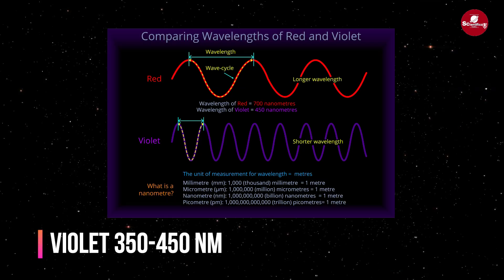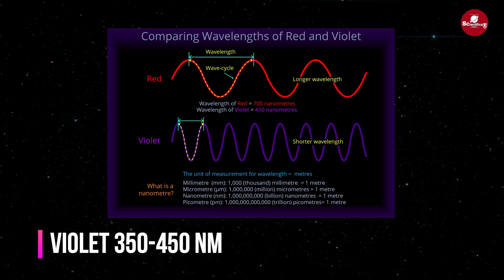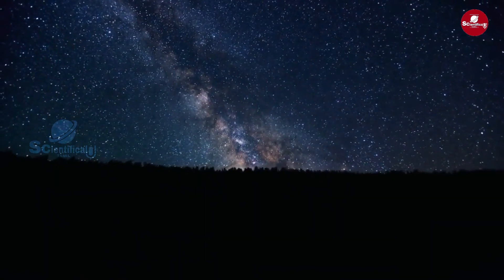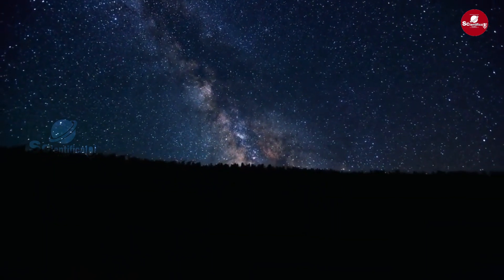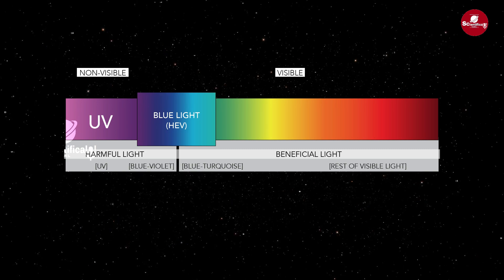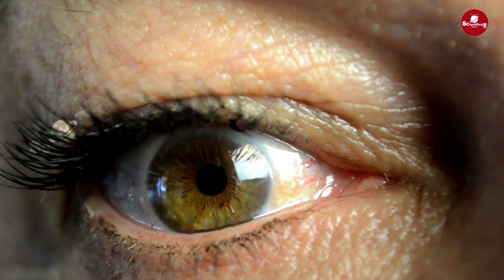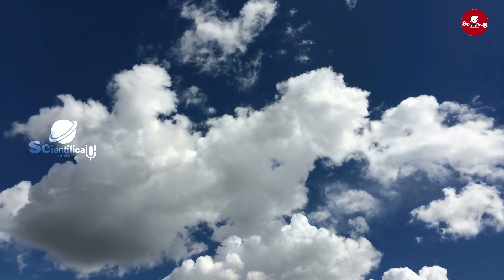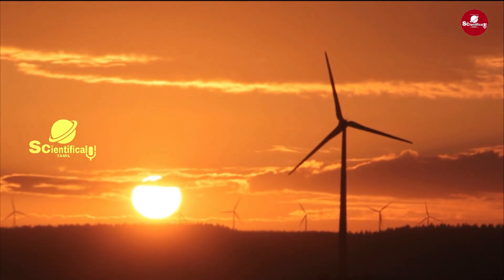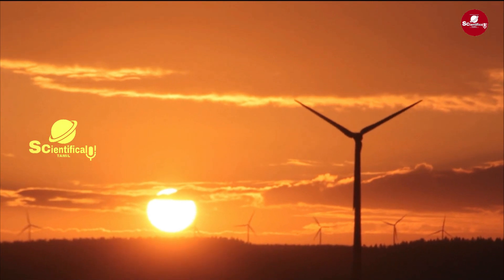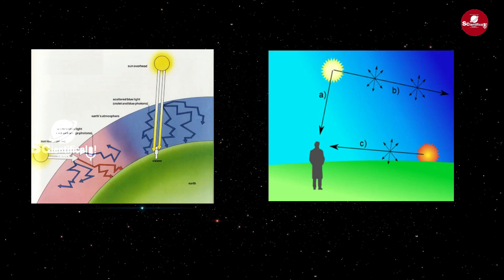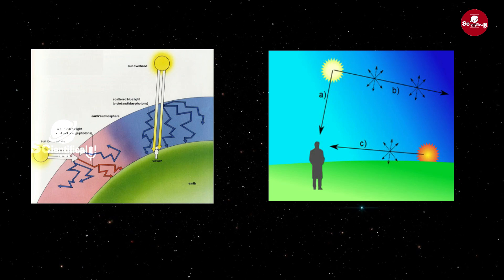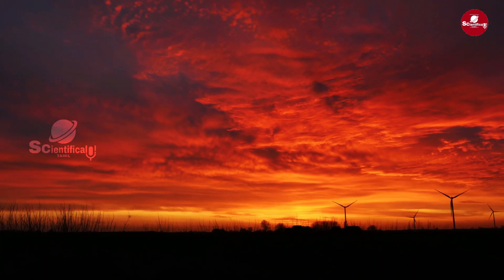Now, the blue color is the violet color. The sky is the violet color. This is the visible spectrum. The violet color is the violet color. At sunrise or sunset time, the blue light travels a longer distance.